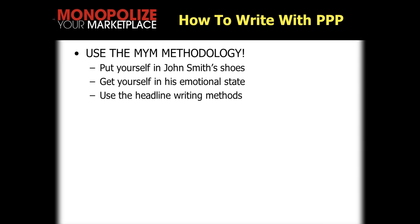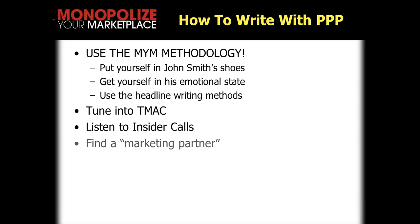So let's move on to how to write with power, precision, and passion. I'm going to strongly encourage you to use the MYM methodology — put yourself in John Smith's shoes, get yourself in his emotional state. Use the headline writing method, John Smith headlines, headline starters specifically. Headline Bank is also helpful. Tune into the Tuesday morning ad clinics — you'll frequently see fine-tuning of power, precision, and passion. Listen to the insider call. Find a marketing partner — somebody you can bounce ideas off. Take the list of words I've given you for power, passion, and precision — 12 words each times three, 36 words you can use to evaluate. Have somebody else look at them. Submit your stuff for staff reviews.